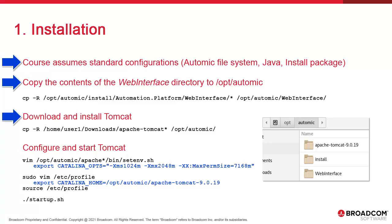Then we download Tomcat from the Apache website. We unzip the package and then copy from the downloads directory to slash opt slash atomic. Tomcat requires some configuration. We have to create a setenv.sh file. This sets the environment for Tomcat when it starts. We also need a CATALINA_OPTS variable, which contains settings for the Apache JVM. We also set the Tomcat home directory variable in /etc/profile. The version of Tomcat should be reflected in the file path.